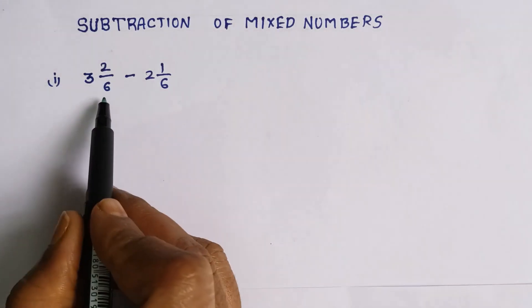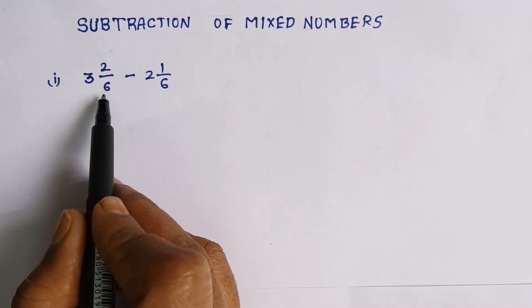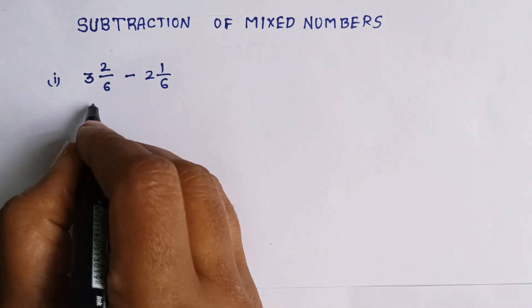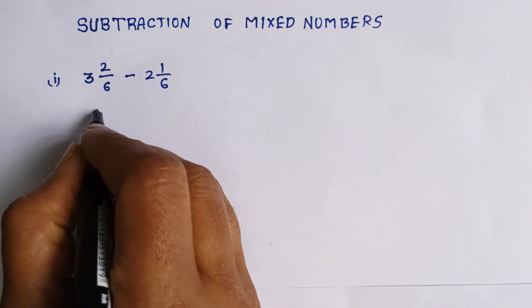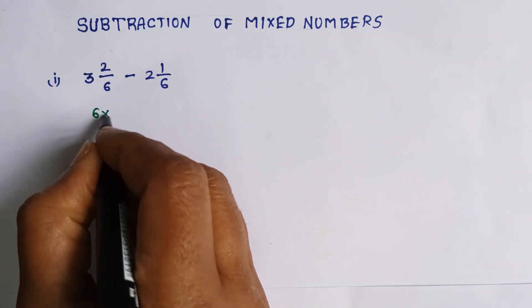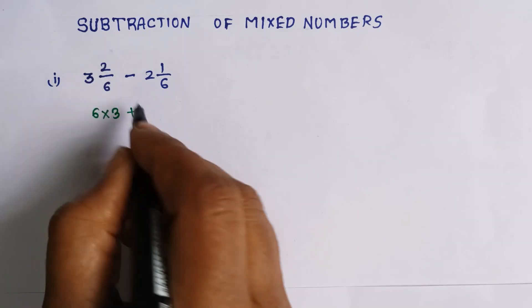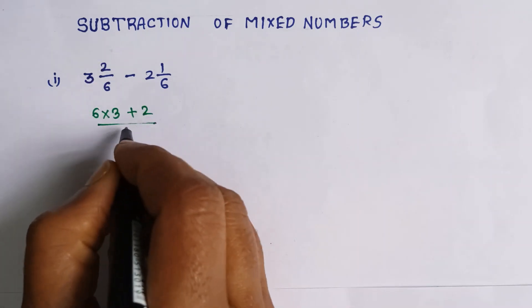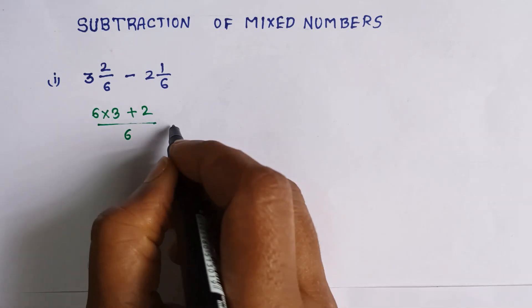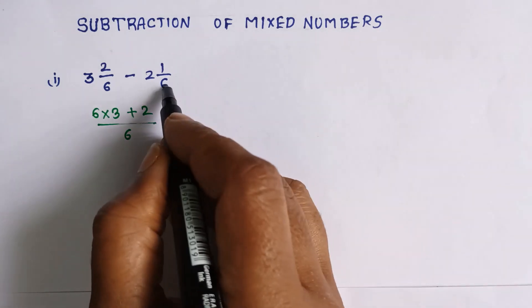First we need to convert this mixed fraction into improper fraction. For that we need to do 6 times 3 and you need to add this 2 by 6, and the subtraction symbol, 2 into 6 plus 1 by 6.